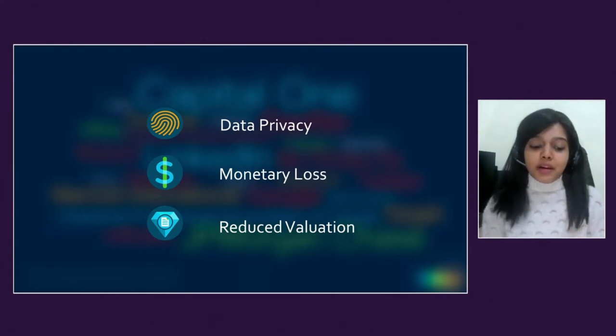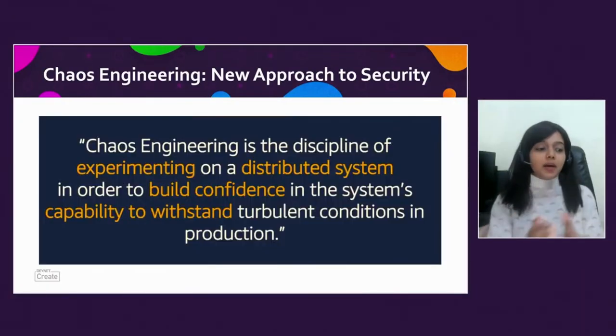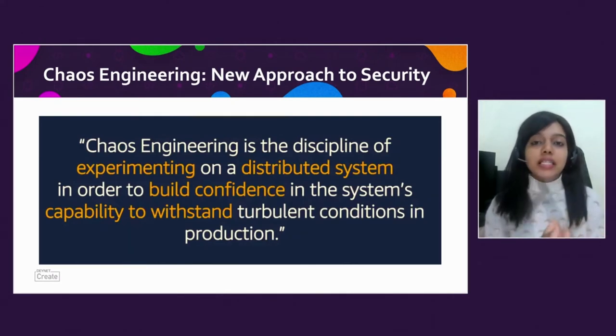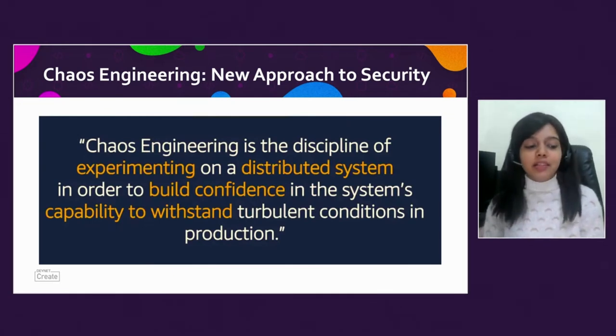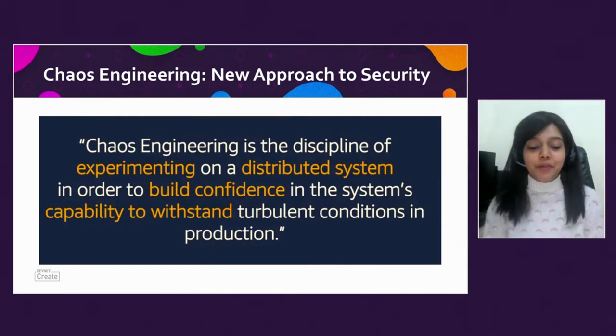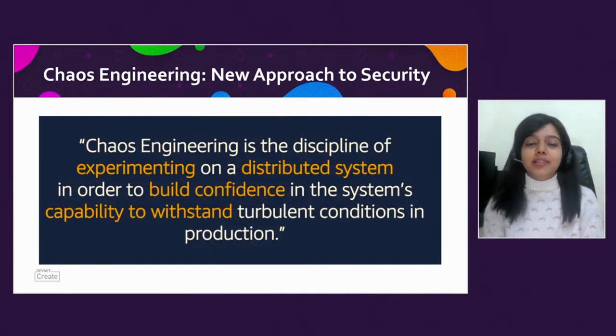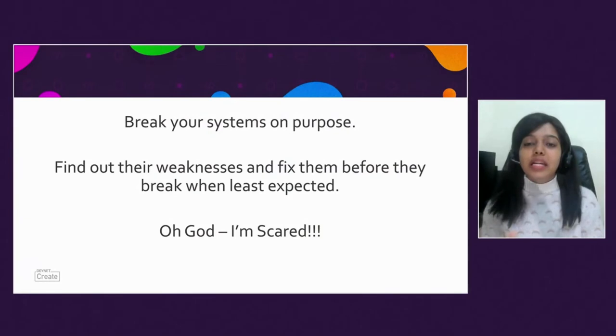We are coming up with a new approach called chaos engineering. Chaos engineering is a discipline of experimenting on distributed systems to build confidence in the system's capability to withstand turbulent conditions in production. In simple terms: break your systems on purpose, find out their weaknesses, and fix them before they break when least expected.